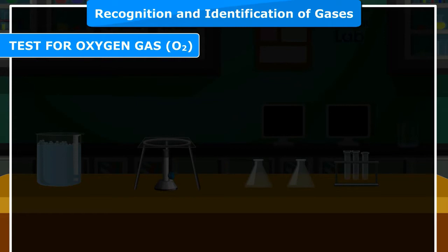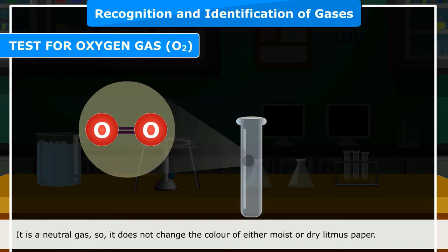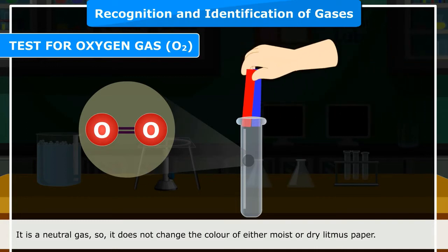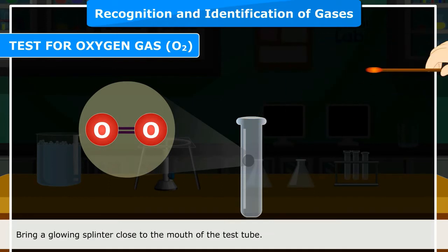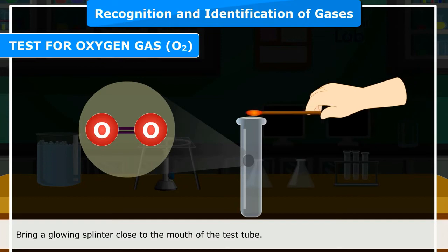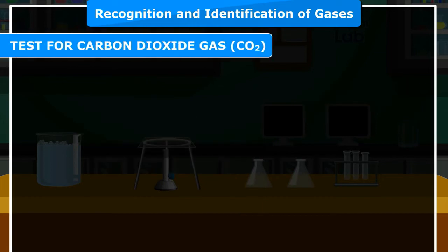Test for oxygen gas (O₂): Oxygen is a colorless and odorless gas. It is a neutral gas, so it does not change the color of either moist or dry litmus paper. Confirmatory test: Bring a glowing splinter close to the mouth of the test tube. The splinter reignites. This confirms that the gas is oxygen.